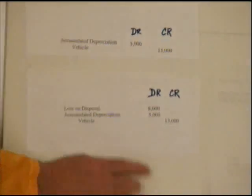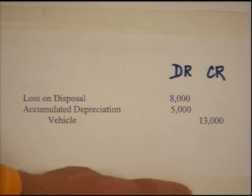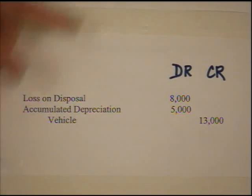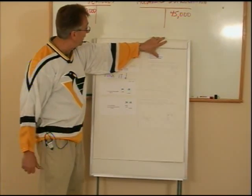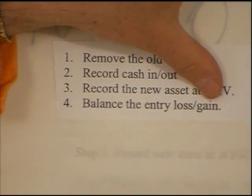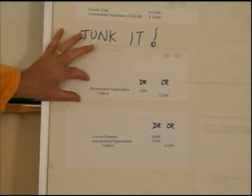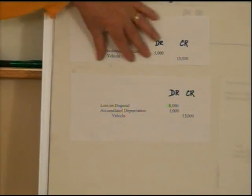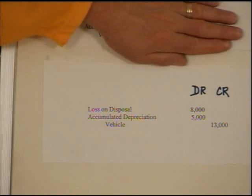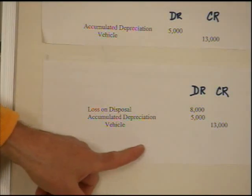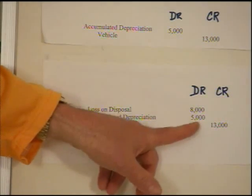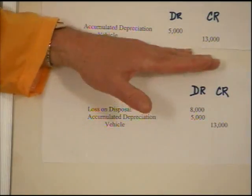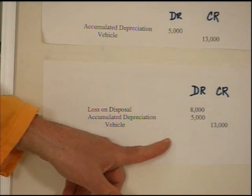We balance the entry so that debits total $13,000 and credits total $13,000, and we call that $8,000 debit a loss on disposal. Loss goes on the left as a debit; if we needed a credit to balance, it would be a gain. The final journal entry shows debits first, next to the margin, with the credit indented — debits total $13,000 matching the credit of $13,000. The step-by-step breakdown is just the process; the actual journal entry is the finished product I expect to see.